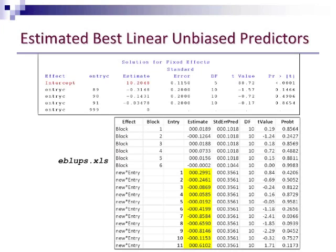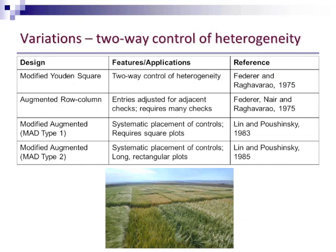If you would prefer to look at these on more of the original scale, you could go back up to your solution for fixed effects and use your intercept value, so you would simply add then all of these estimates onto your intercept value to get the BLUP estimate that you could use for selection, for example.